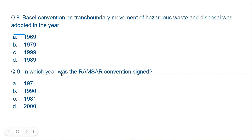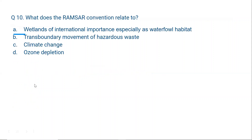Question number nine: In which year was the Ramsar Convention signed? The Ramsar Convention is one of the oldest conventions and it was signed in the year 1971 at a place called Ramsar in Iran. Question ten: What does the Ramsar Convention relate to? It relates to wetlands of international importance, especially as waterfowl habitat.